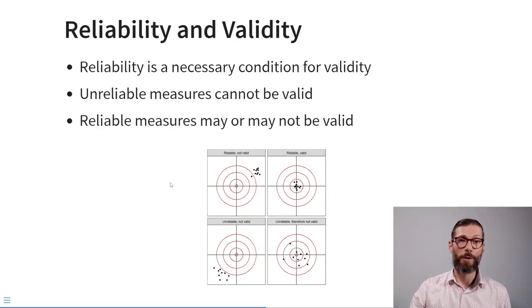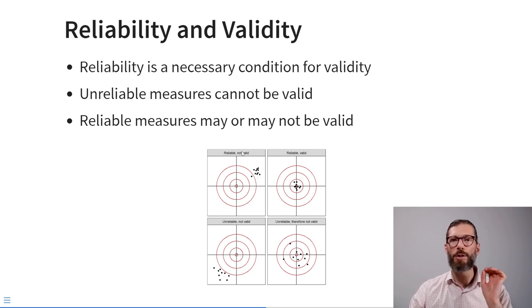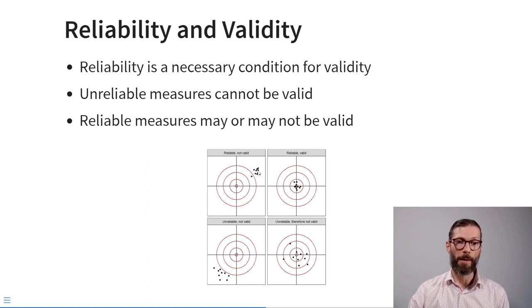The bullseye is a useful metaphor. In the top left, we see an instrument that is reliable but not valid: all darts hit pretty much the same place, but way off the center. These items consistently measure something — it's just not what we wanted to measure. So this is a reliable questionnaire, but not a valid one.